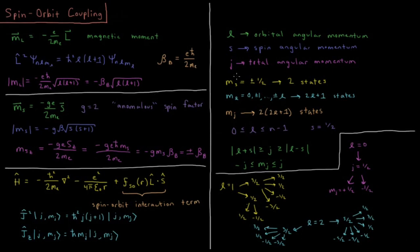What values of j can we have for given values of s and l? j takes every integer or half-integer from |l+s| down to |l−s|, and m_j is an integer from −j up to j. For example, if l=0 (an s orbital), j = 1/2 because s = 1/2, and |0+1/2| = |0−1/2| = 1/2. So m_j equals ±1/2 for an electron in an s orbital.